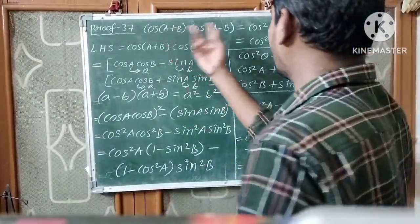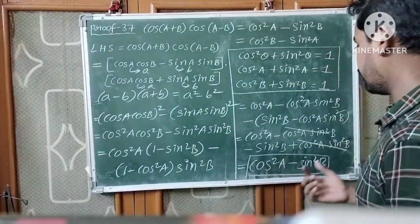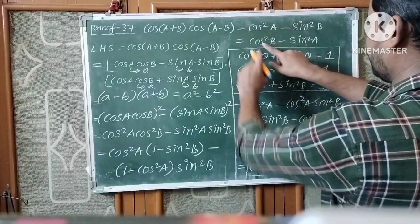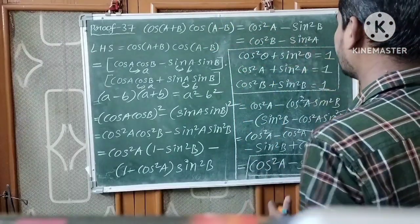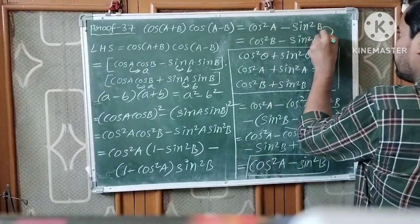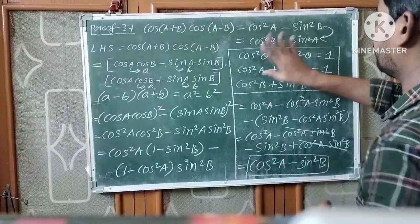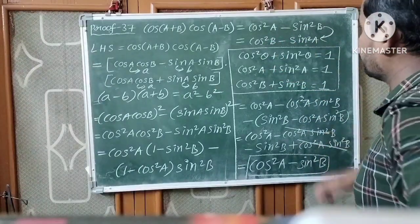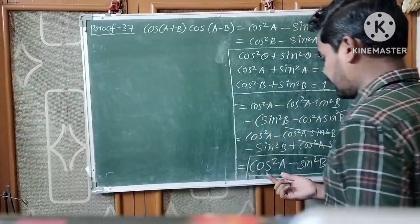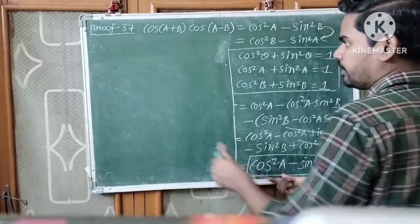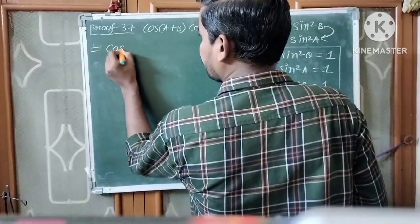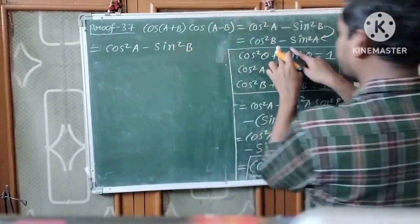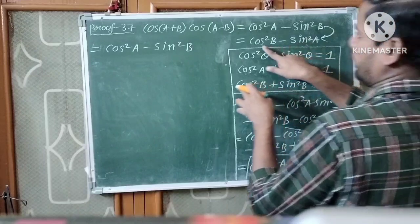Therefore, cos(A+B)·cos(A-B) = cos²A minus sin²B. Now we also have to prove this equals cos²B minus sin²A. From the relation cos²A minus sin²B, we can derive cos²B minus sin²A.